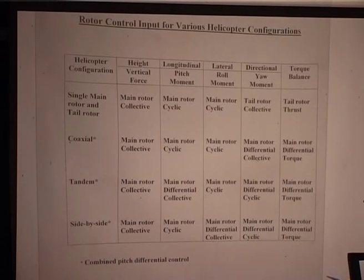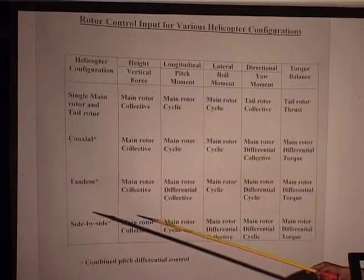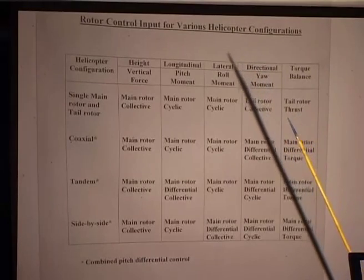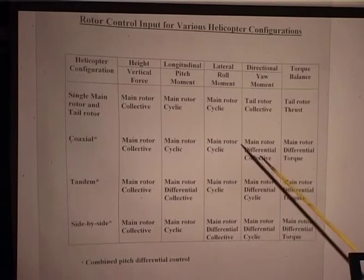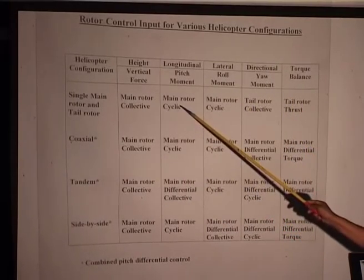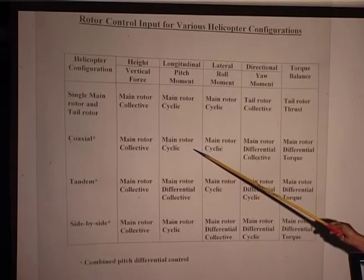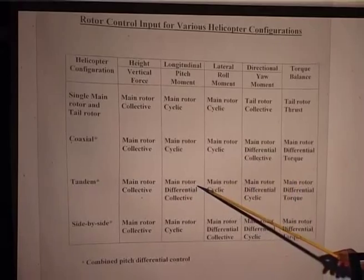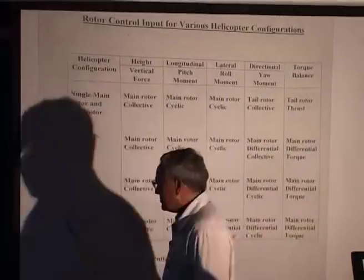Everything has main rotor collective, even if you have two rotors — coaxial. Collective means the pitch angle changes uniformly over all the blades at every azimuth location. When you take longitudinal motion — that means pitch — you will find main rotor cyclic for single rotor and coaxial. But when you have tandem, meaning one rotor behind the other, you can have differential collective: one side you increase the collective, the other you reduce, so a pitching moment is generated.